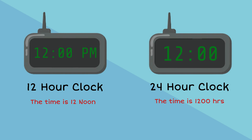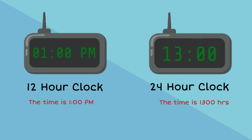When it is 1 p.m. on the 12-hour clock, on the 24-hour clock we continue counting from 12, so it will read 1300 hours. In 24-hour time, the first two digits represent hours, whereas the last two digits represent the minutes.